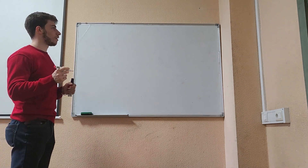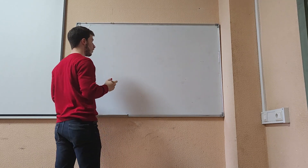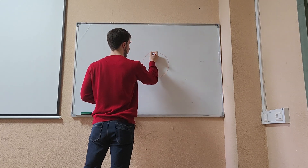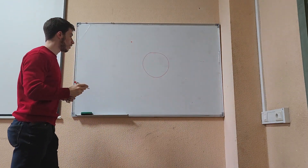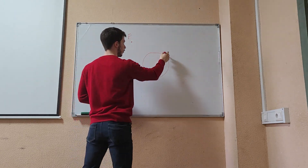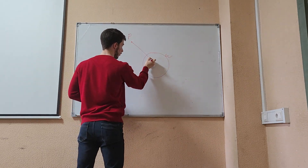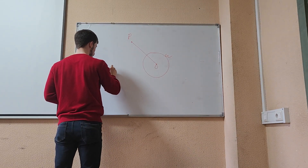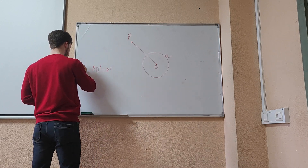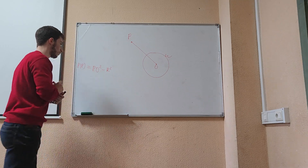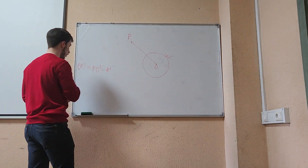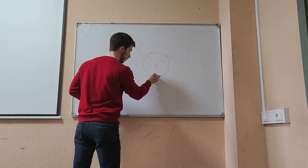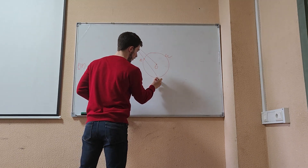Let's discuss the theorem of radical axes. First, define what is the power of a point. If we are given a circle and any point in the plane, the power of point P with respect to circle omega is equal to PO squared minus R squared. Let's prove that this is always equal to PB times PC.